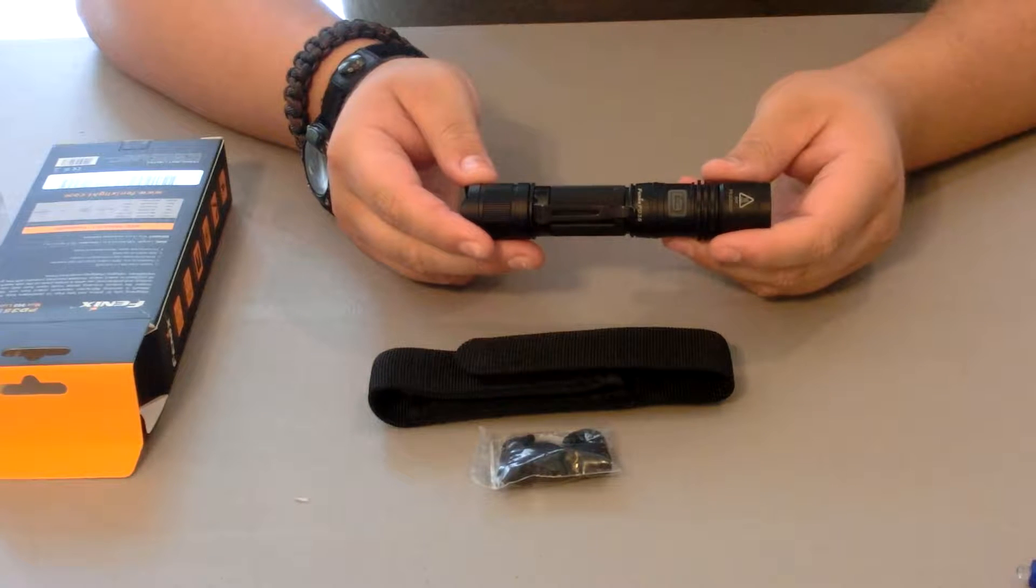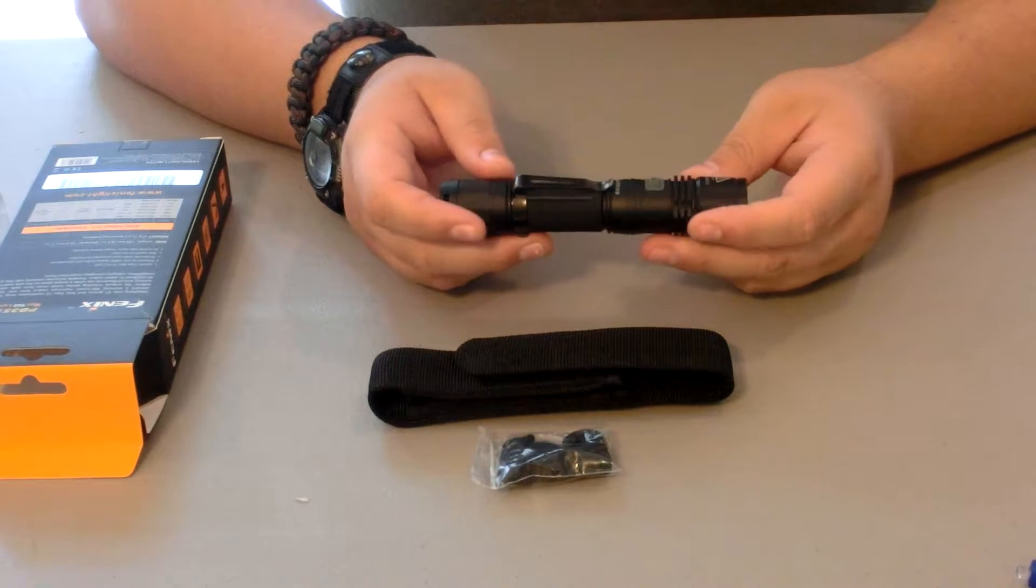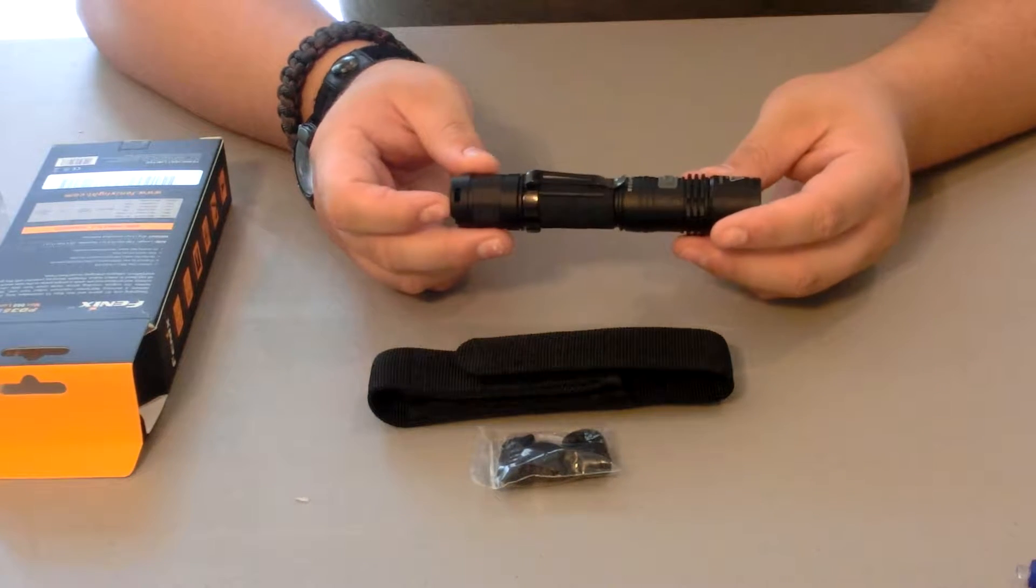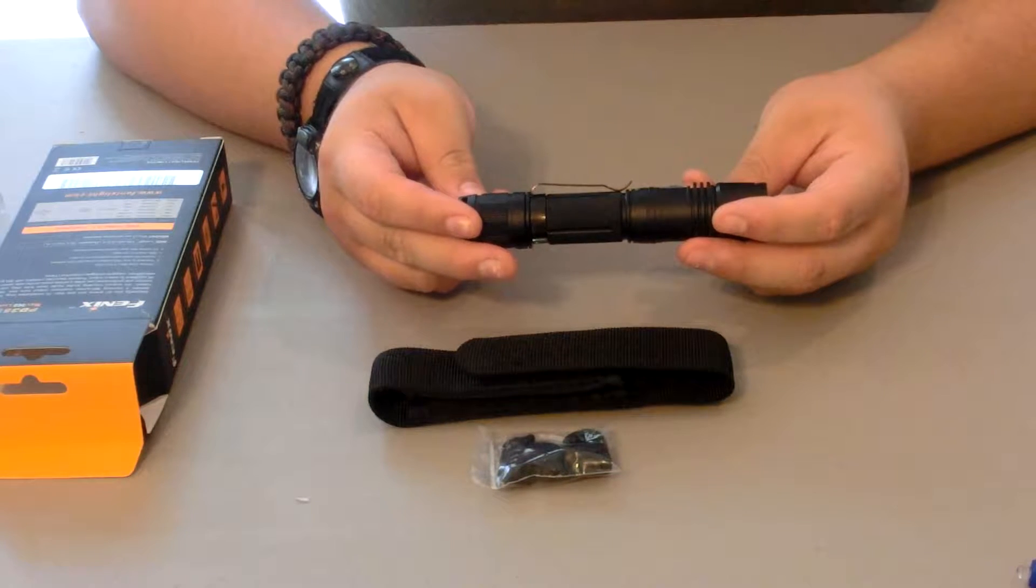The weight is 87 grams or 3 ounces without the batteries in it. It utilizes a Cree XM-L2 U2 LED and its max output is 960 lumens. That is very bright.